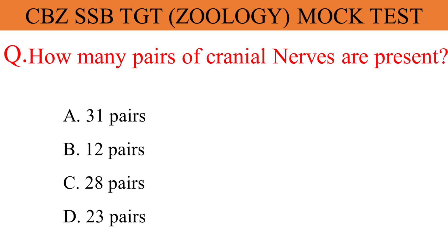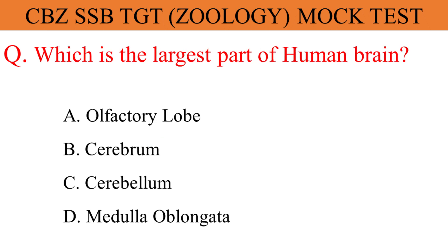How many pairs of cranial nerves are present? The given options are A. 31 pairs. And the correct answer is option B. 12 pairs.